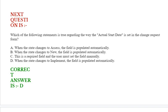Which of the following statements is true regarding the way the actual start date is set in the change request form? Option A: When the state changes to access, the field is populated automatically. Option B: When the state changes to new, the field is populated automatically. Option C: This is a required field and the user must set the field manually. Option D: When the state changes to implement, the field is populated automatically.